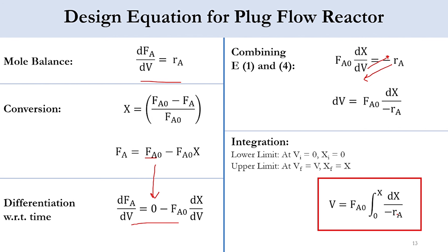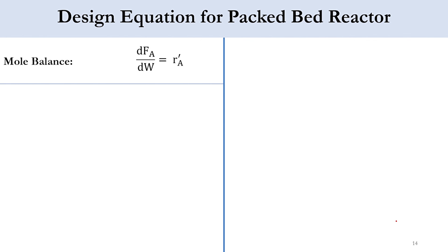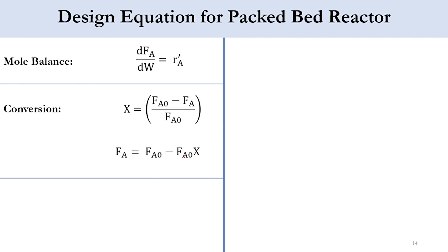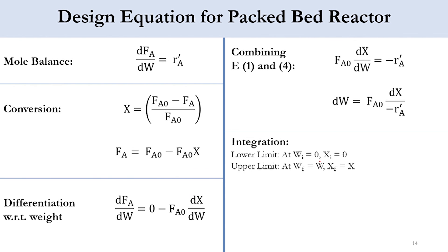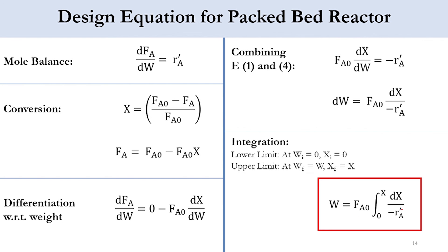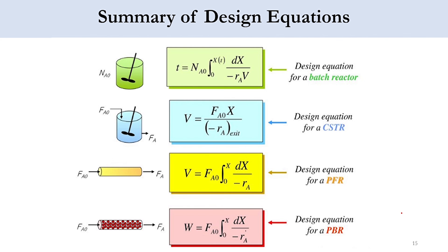For the packed bed reactor (PBR), volume V is replaced by catalyst weight W, and −rA (mol/volume/time) is replaced by −rA' (mol/g-catalyst/time). The mole balance becomes dFA/dW = rA'. Following the same procedure — substituting FA = FA0 − FA0·X, differentiating, and integrating from W = 0 (X = 0) to W = W (X = X) — gives W = FA0·∫₀ˣ dX / (−rA'). In summary: batch uses time, CSTR and PFR use volume, PBR uses catalyst weight.